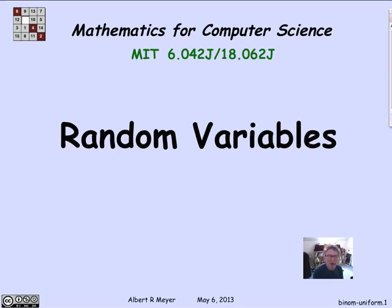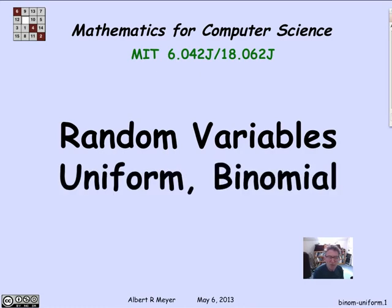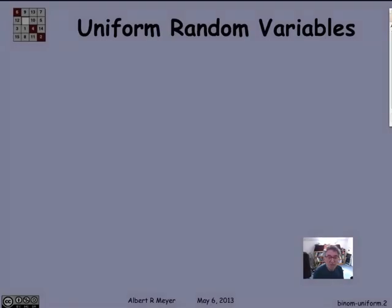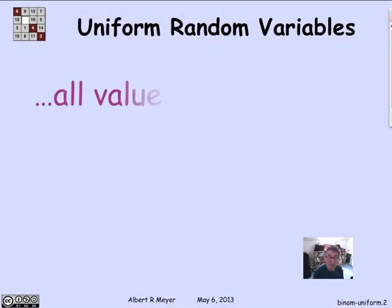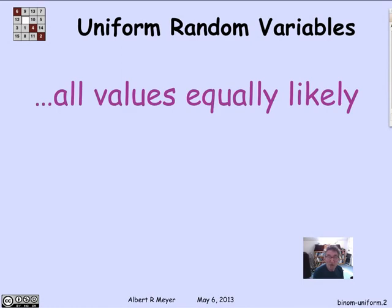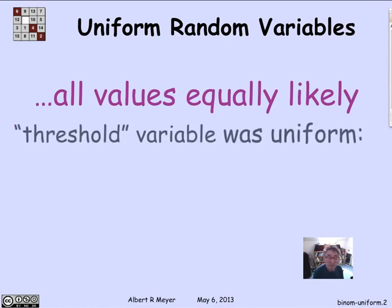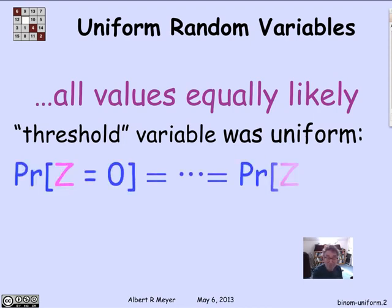Certain kinds of random variables keep coming up. Let's look at two basic examples now: uniform random variables and binomial random variables. Let's begin with uniform, because we've seen those already. A uniform random variable means that all the values it takes, it takes with equal probability. The threshold variable z took all the values from 0 to 6 inclusive, each with probability 1/7, so it was a basic example of a uniform variable.